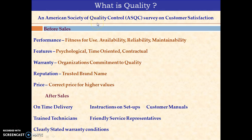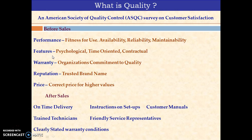The American Society for Quality Control surveyed different customer satisfactions. There are two basic categories in which we can define quality: before sales and after sales. Before sales, the customer may expect performance as one of the important quality characteristics — service or product performance. It should be fitness for use, availability, reliability, maintainability, and the features they are expecting from the product. They also use two psychological aspects: time-oriented and contractual. Warranty is another aspect, as well as reputation — the trust and brand for which the customer always goes — and price, meaning correct pricing or higher value.